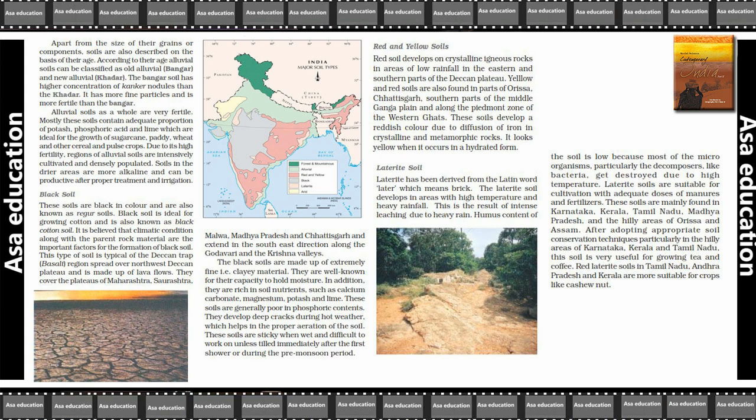Humus content of the soil is low because micro-organisms, particularly decomposers like bacteria, get destroyed due to high temperature. Laterite soils are suitable for cultivation with adequate doses of manure and fertilizers.